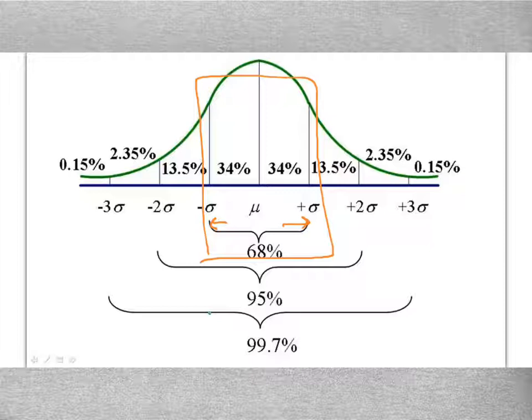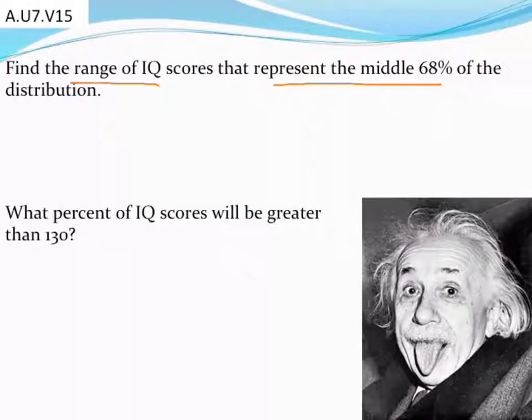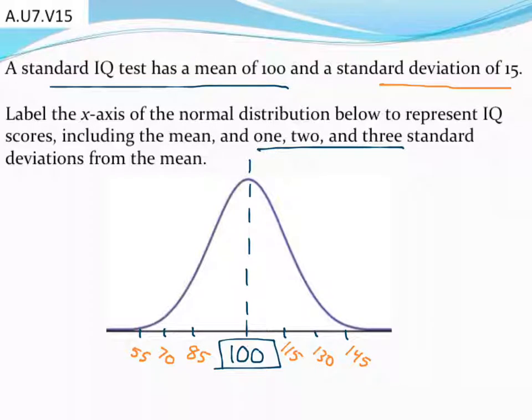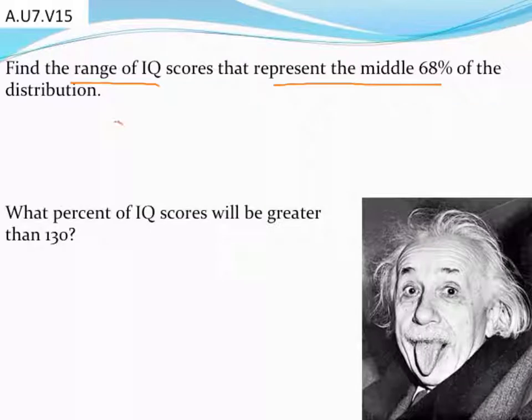So going back to look at the graph we made then, we're going to look for those same values. What was one standard deviation below? What was one standard deviation above? And so I can see that those values must be right there. There's my first set of standard deviations, one above and below.